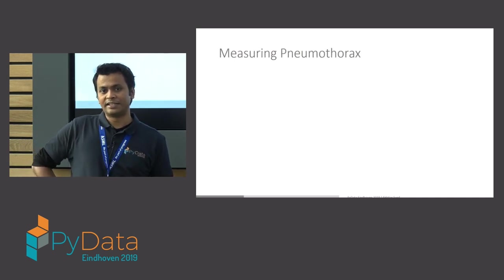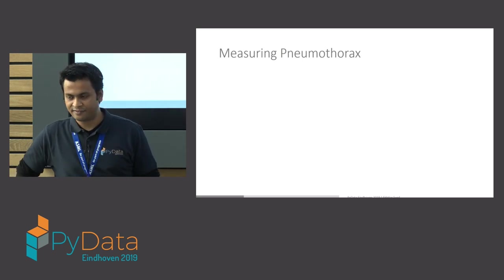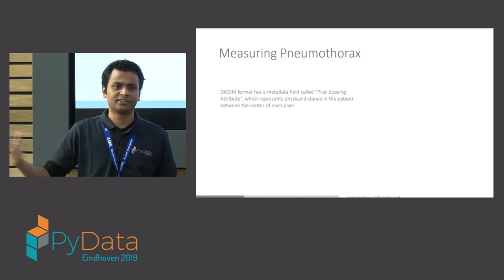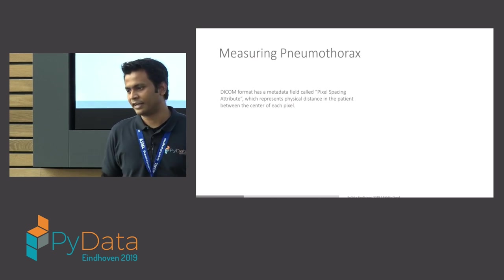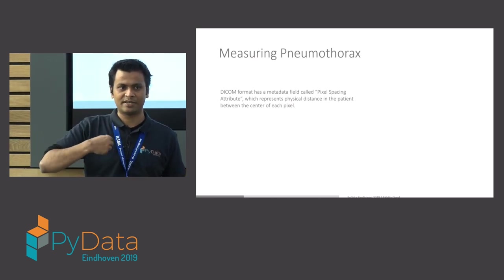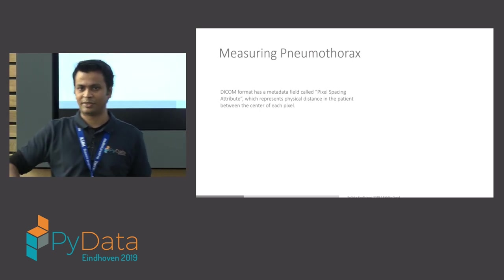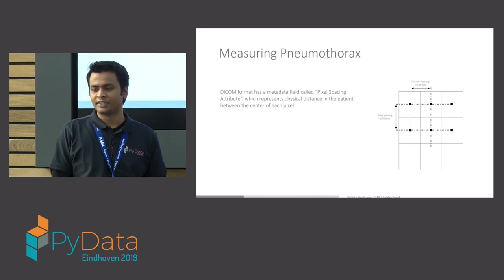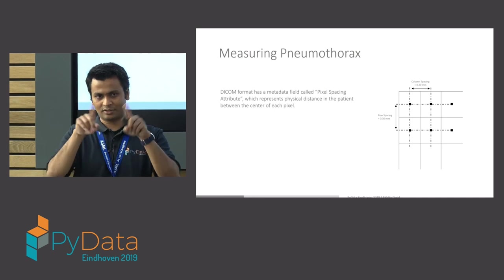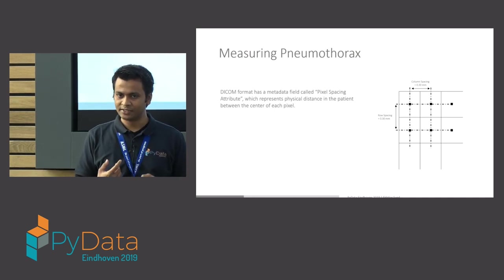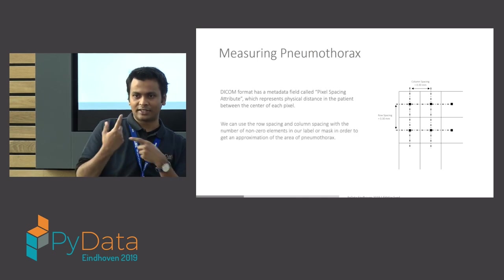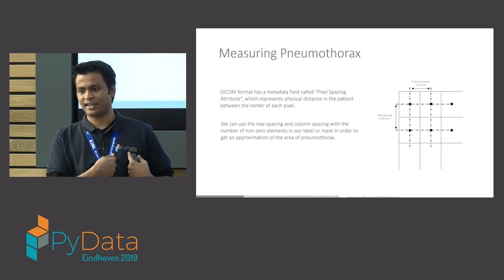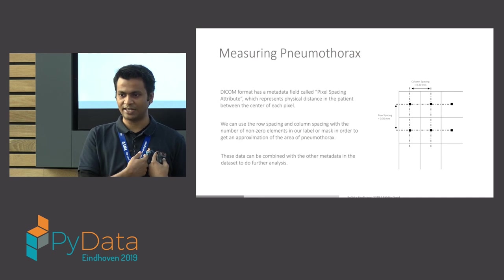Another nice thing in the metadata is the field called pixel spacing. Because it's in a highly standardized medical image capturing format, they have the concept of giving you the physical space in the patient's chest and what it means in pixel-to-pixel distance. So you have column spacing and row spacing, and from that you can approximate the area. We also have the mask, so if you count the non-zero elements of the mask, you can estimate the size of the buildup. That's exactly what I did in this challenge.